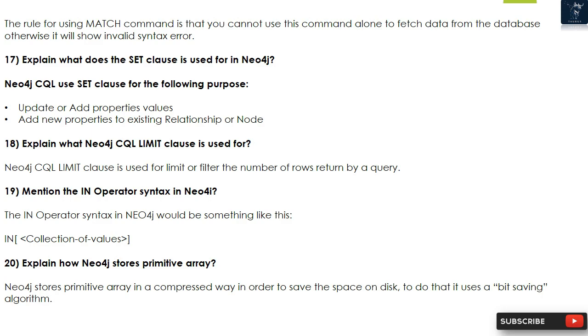Question 20: Explain how Neo4j stores primitive arrays. Neo4j stores primitive arrays in a compressed way in order to save space on disk. To do that, it uses a bit-saving algorithm.